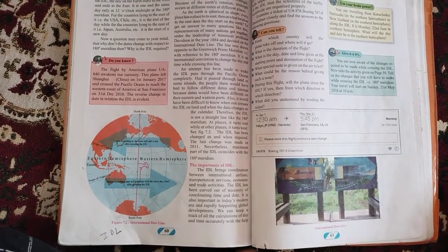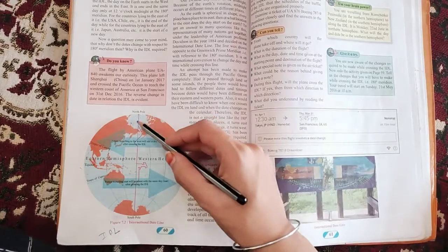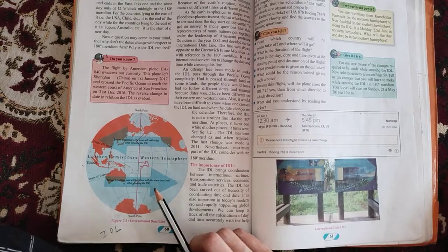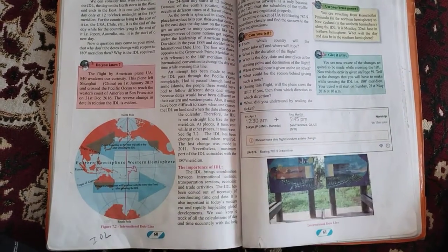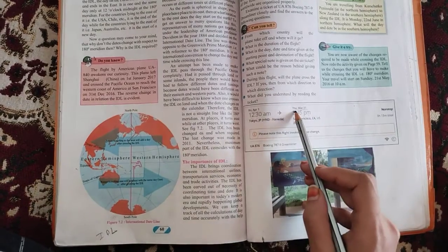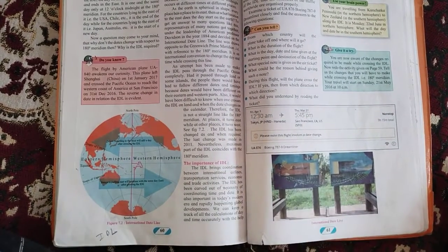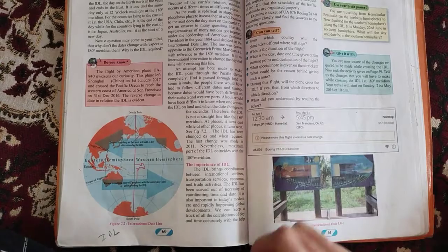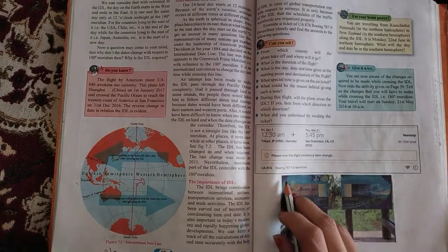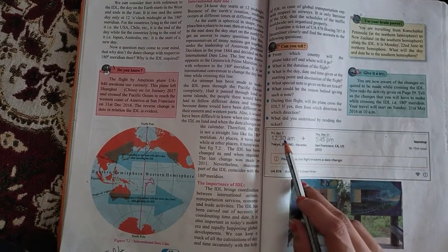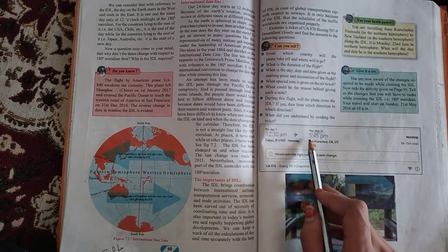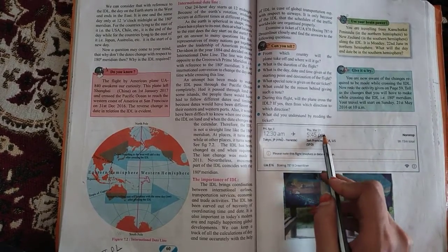One crosses the IDL international date line while traveling towards east. For example, please observe this ticket. If you look at this ticket, you will come to know that the date is given April 1st, but the reaching time is on Thursday 31st. And if you will look at the timing of departure, the timing is 12.30 am, but the reaching time is denoted 5.45 pm in the evening.